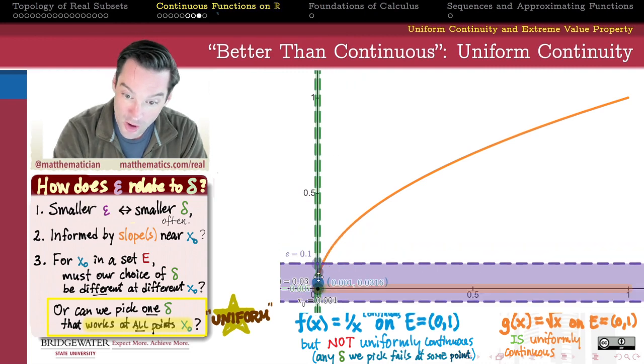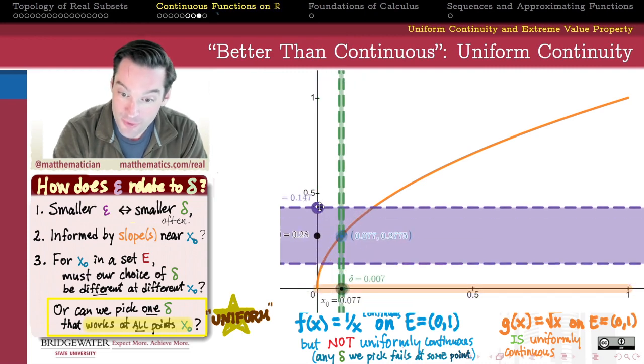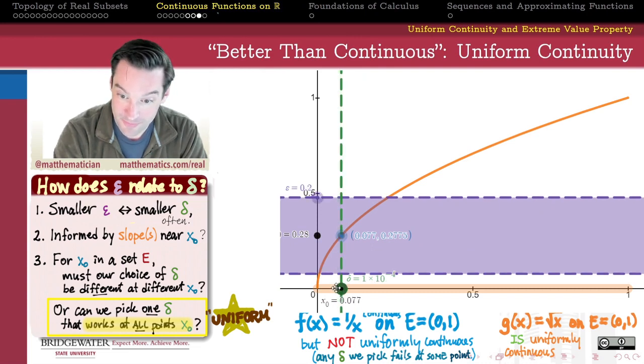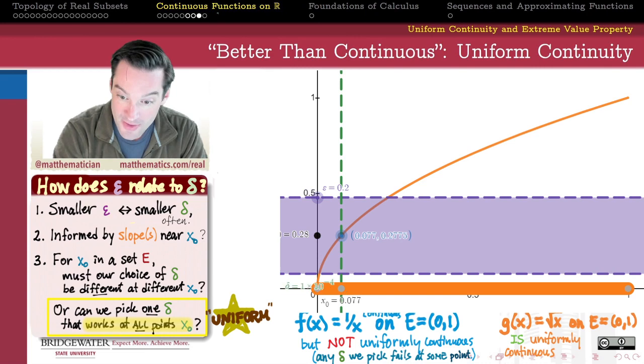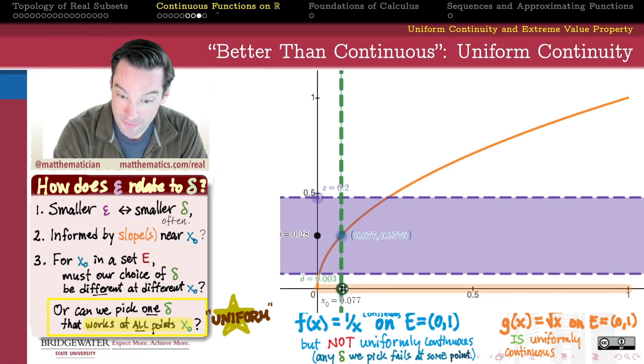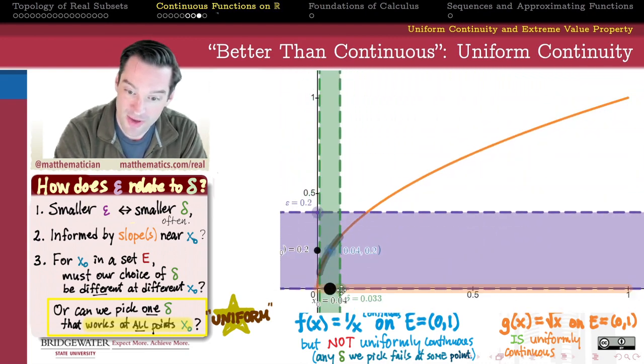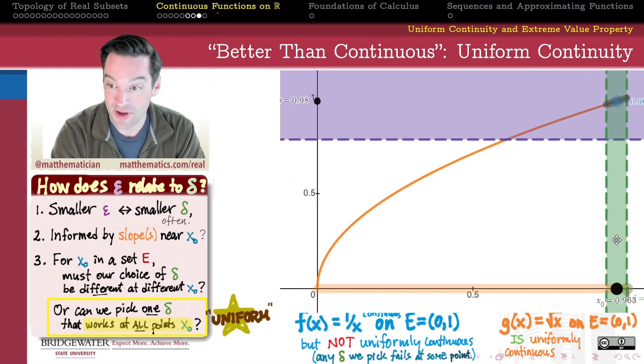such that no matter where I am in my domain open interval from 0 to 1 all of the y values associated with the x values that are delta close to x0 will be epsilon close to f of x0. So there's a single delta that's capable of ruling them all in this example. And so this is an example of what we would call a uniformly continuous function. The same delta works everywhere across this entire domain.